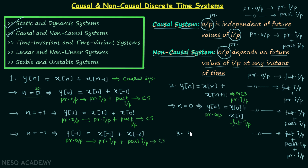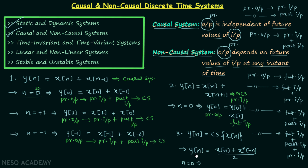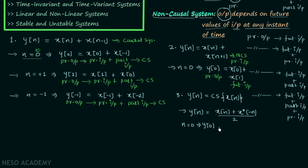In example 3, the output y[n] is equal to the conjugate symmetric part of the input x[n]. We know the conjugate symmetric part of x[n] equals (x[n] + x*[-n]) / 2. If we put n = 0, the output is y[0] = (x[0] + x*[0]) / 2. So the present output is depending on the present input and the conjugate of the present input.